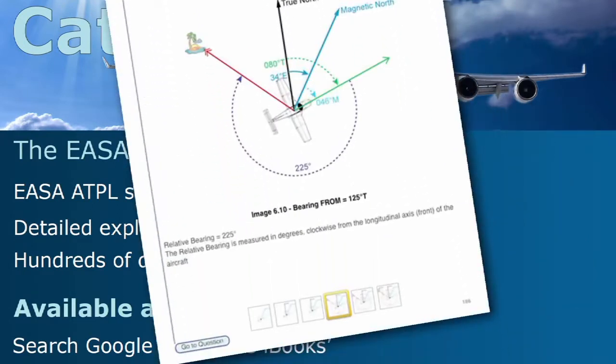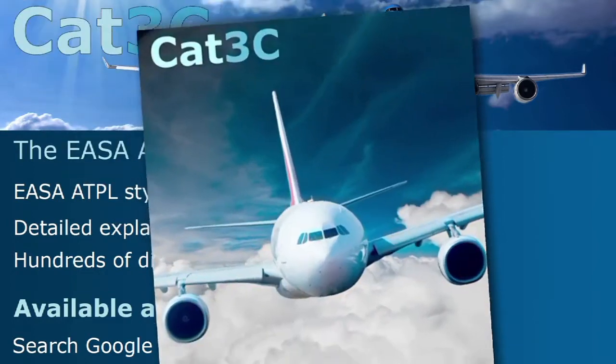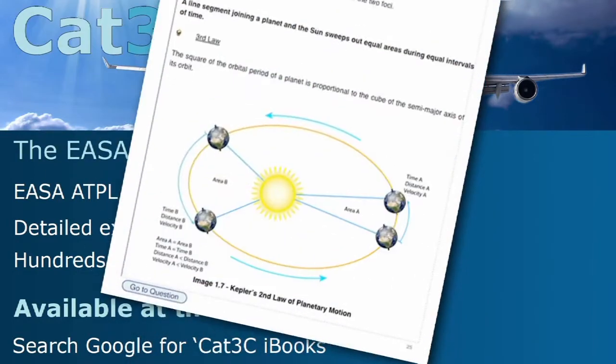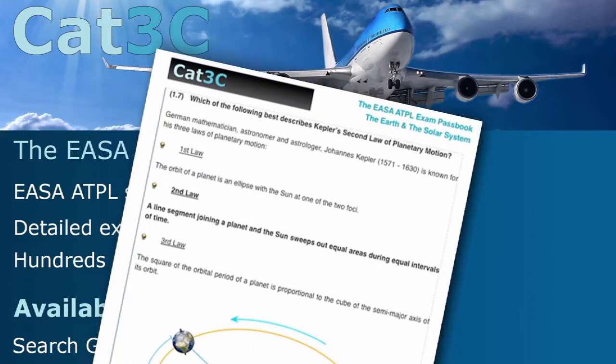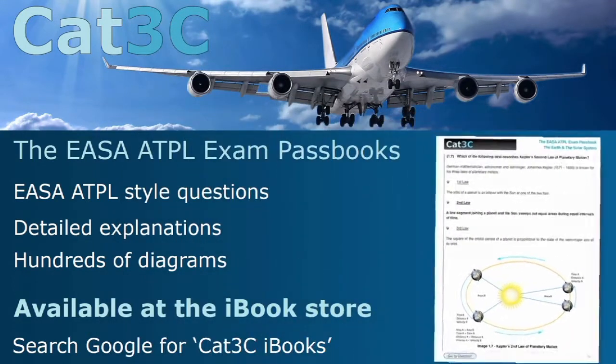The passbooks contain hundreds of exam-style questions and are supported by clear in-depth explanations and interactive diagrams. The link to the iBooks can be found on the webpage below or at the Cat3C website at the bookstore tab.